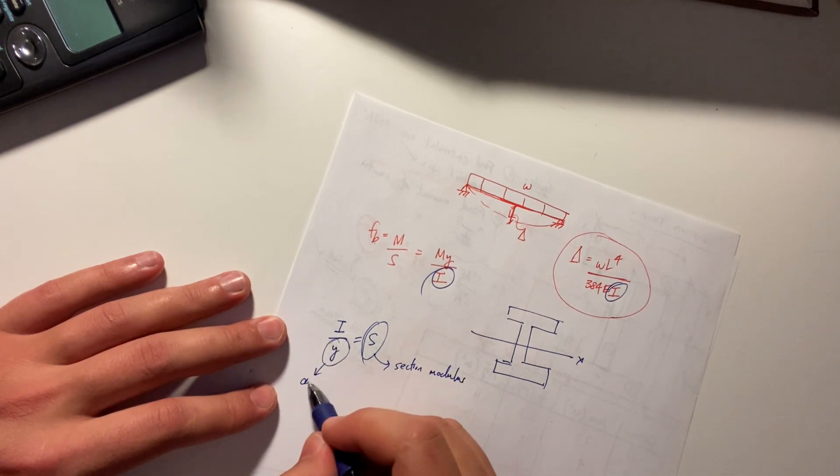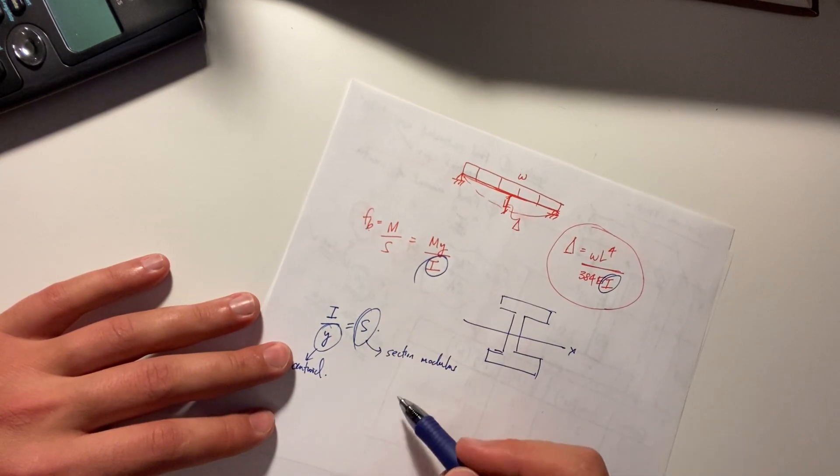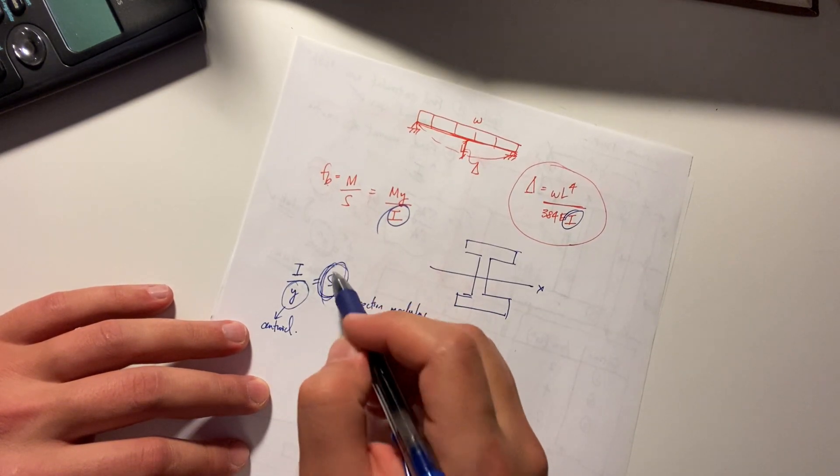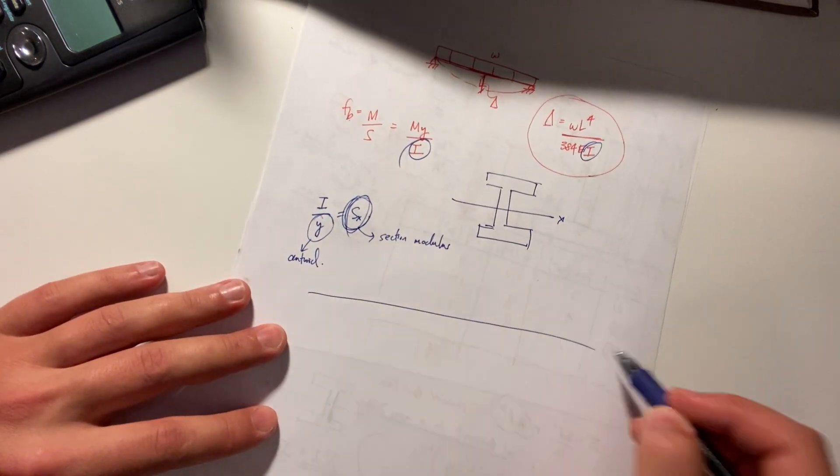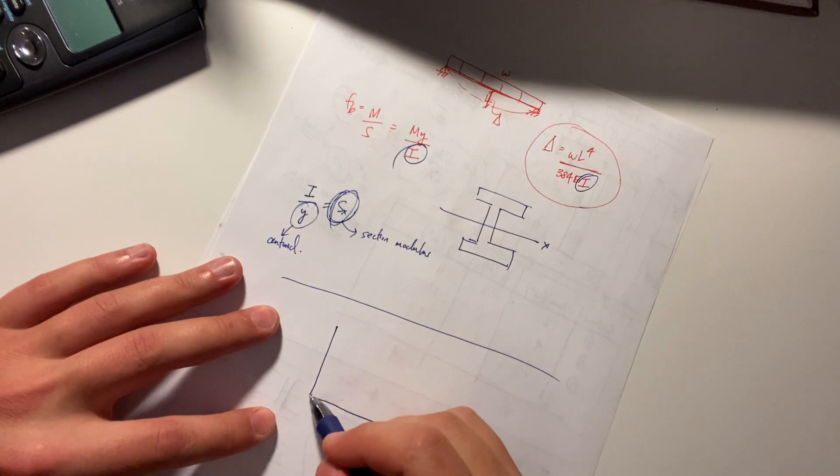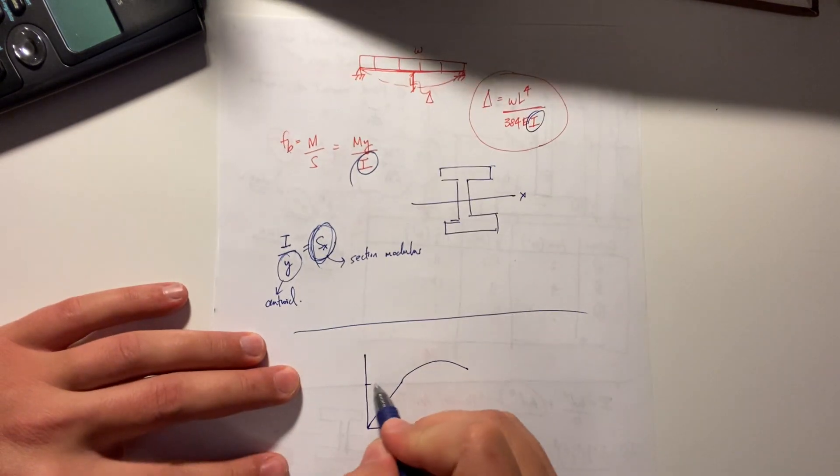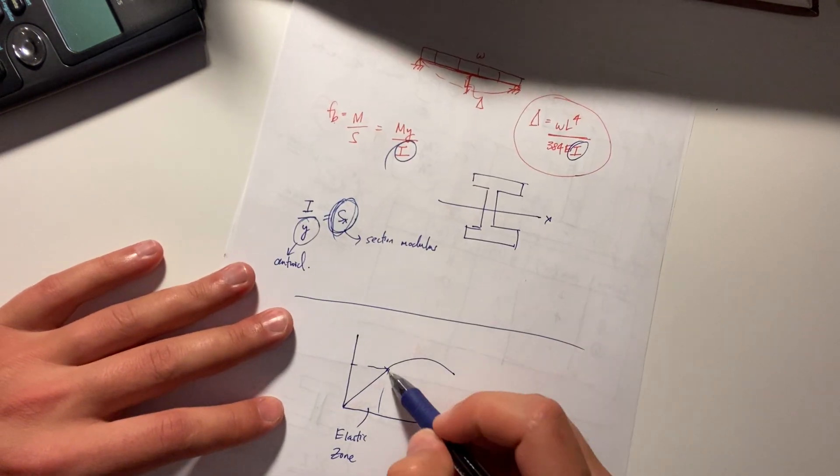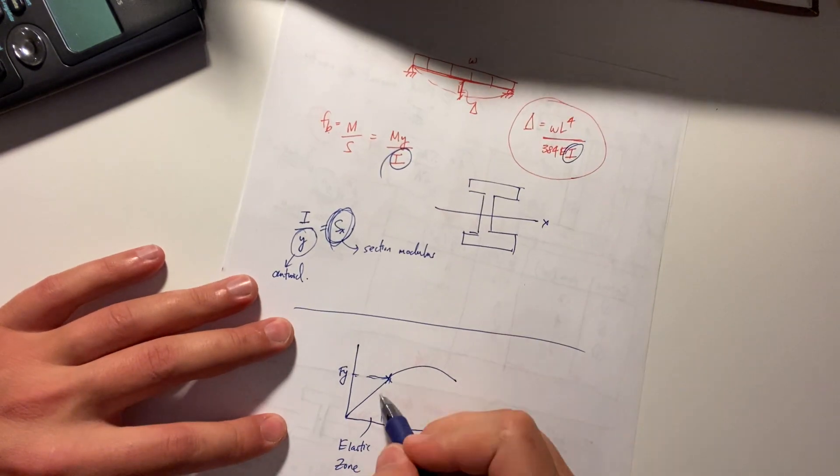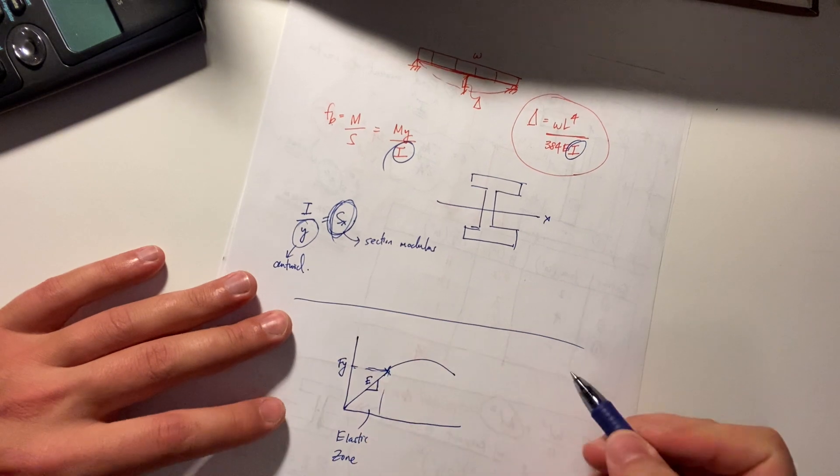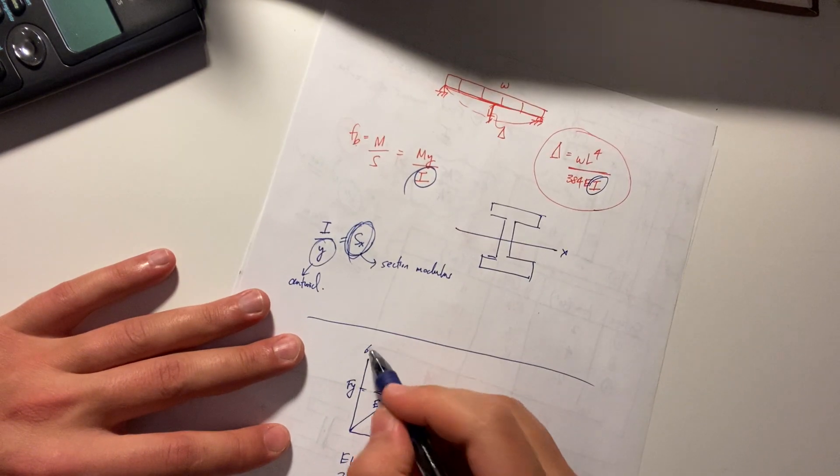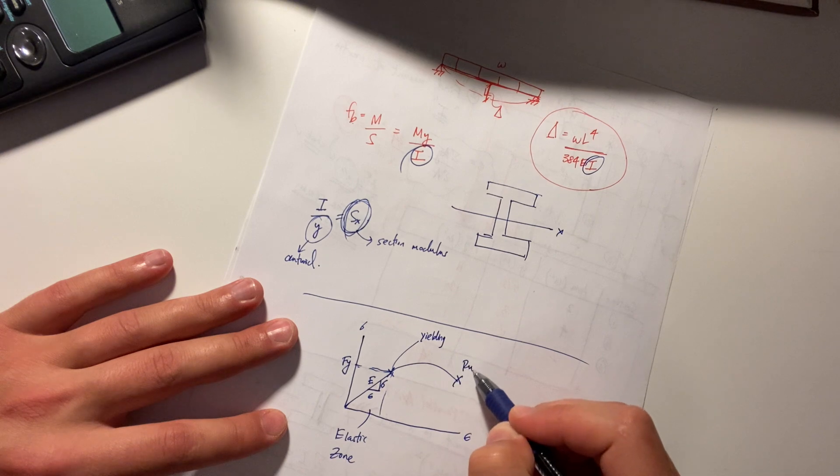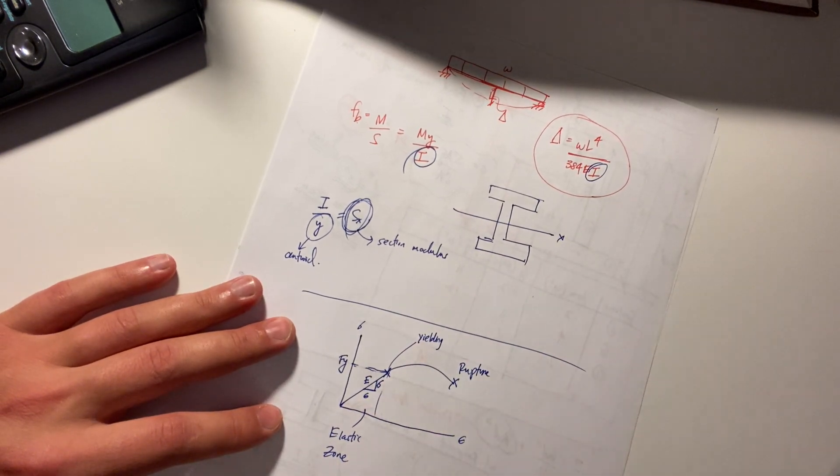Where y is the centroid s is used a ton and anytime you talk about s in particular what you're really talking about so this is what we call the elastic zone this here is fy this slope is the young's modulus stress over strain so here you have yielding somewhere here you have rupture